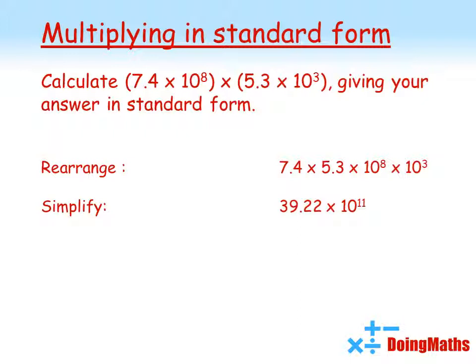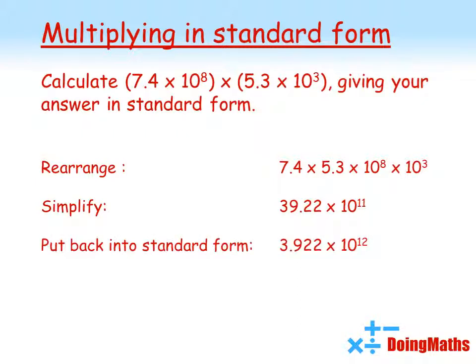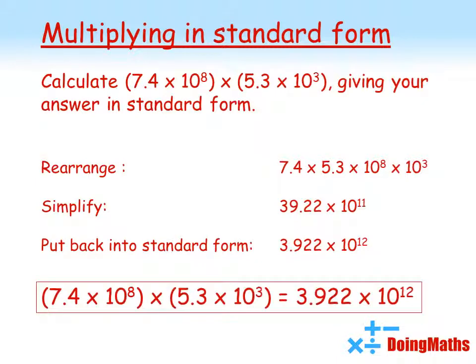For the powers of 10, remember we add those powers together, so we've got 10 to the power of 11. Now again, we're almost in standard form but 39.22 is bigger than 10, so it's not quite right. So we'll convert it into standard form, and there's our answer: 3.922 times 10 to the power of 12.